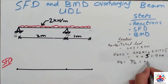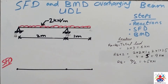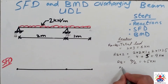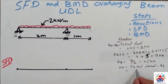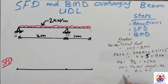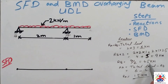4 plus 5 is equal to 9 kilonewtons, so RB is equal to 9 divided by 2, which is 4.5 kilonewtons. Now I have to calculate reaction at RA. RA is equal to total load minus RB — that is 6 minus 4.5 — so RA is equal to 1.5 kilonewtons.